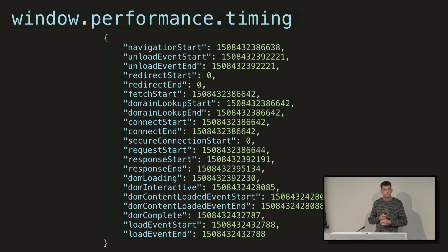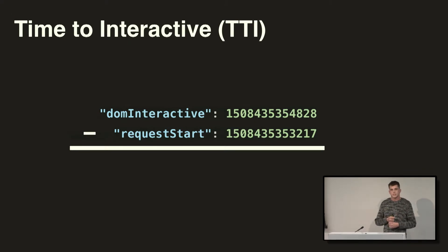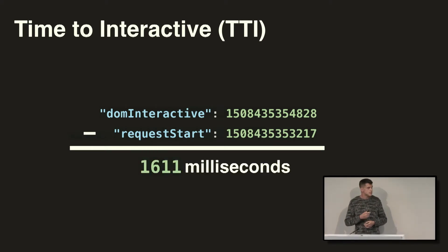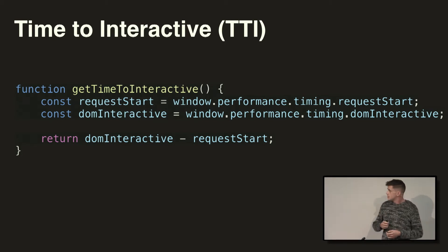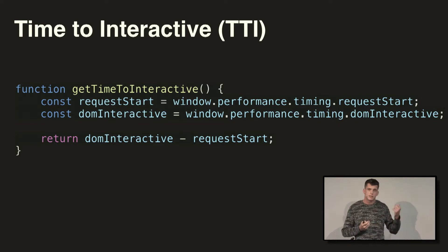I want to highlight two figures: request start and DOM interactive. We can use these two timestamps to calculate a pretty useful metric. At Netflix, we call that Time to Interactive, or TTI. What this actually represents is the difference in time between when the user clicks go on their browser and when the DOM reports itself as interactive. In this case, it's 1,600 milliseconds. Here's a simple bit of JavaScript that will calculate this for you — just grab request start and DOM interactive off of the Performance API and subtract them. You can drop this into any website in the console and it'll spit out a figure for you.